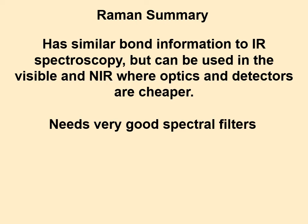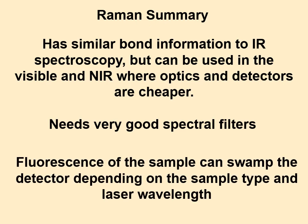You need very good spectral filters because you have to block out a lot of the wrong light just to see the right light. Raman is also often plagued by fluorescence — many molecules fluoresce heavily and create a lot of unwanted light that can swamp your detector. You have to find a way around that, either by changing your laser wavelength or doing some high-speed optical gating.